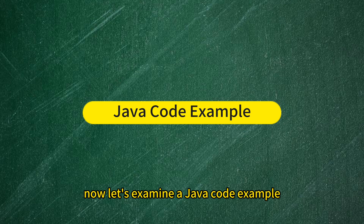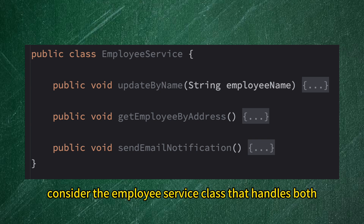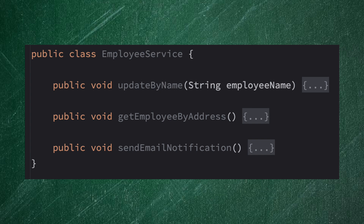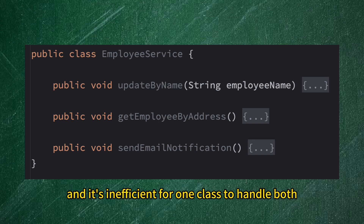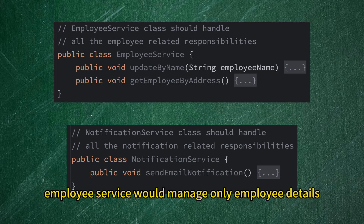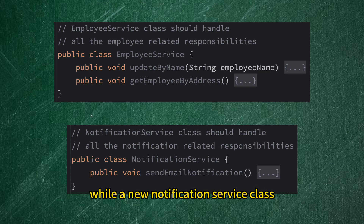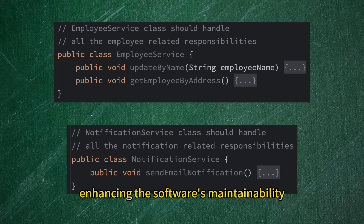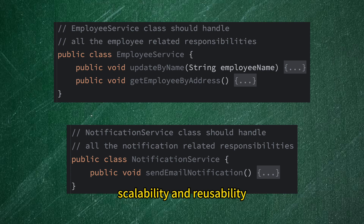Now, let's examine a Java code example to solidify our understanding. Consider the Employee Service class that handles both employee management tasks, like querying and updating information, and also manages email notifications. These functions are unrelated, and it's inefficient for one class to handle both. A better design would separate these tasks: Employee Service would manage only employee details, while a new Notification Service class would handle the email notifications. This approach adheres to the Single Responsibility Principle, enhancing the software's maintainability, scalability, and reusability.